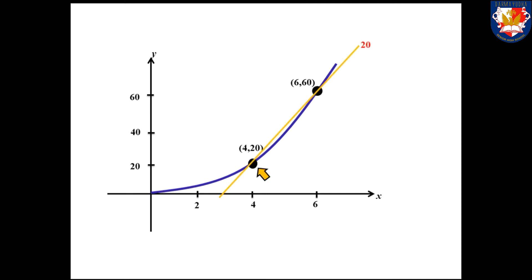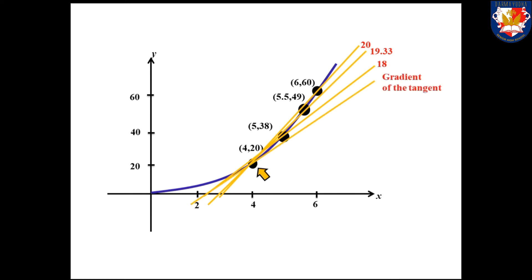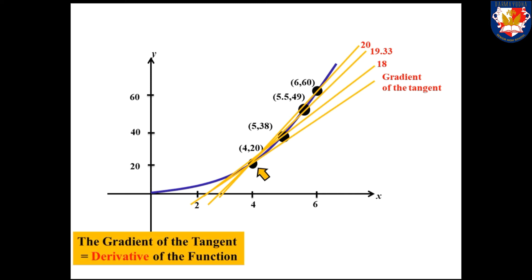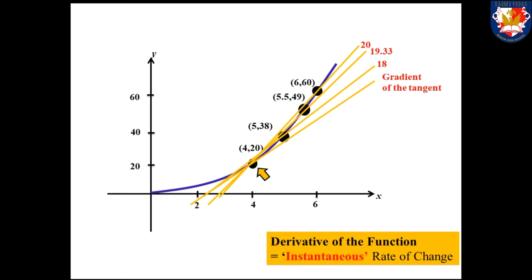Take another point such that it is getting closer to the intended point. The average rate of change between those two points gives 19.3. Take the point even closer, and the gradient becomes 18. If we keep taking points closer and closer to the intended point, we reach the conclusion that what we are finding is the gradient of the tangent. From the last lesson, we know that the gradient of the tangent is actually the derivative of the function. So the gradient of the tangent is the rate of change at a single point.